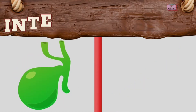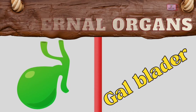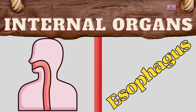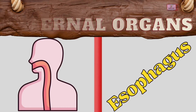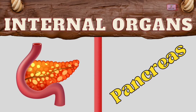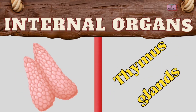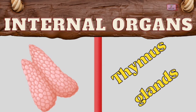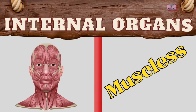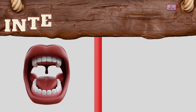Trachea. Gallbladder. Esophagus. Pancreas. Thymus Gland. Muscles.